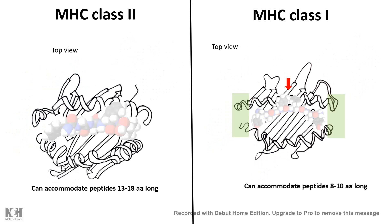MHC class 1's peptide binding groove is such that the ends are narrowed and closed. As a result, only small or shorter peptides ranging from 8 to 10 amino acids in length can be accommodated in that groove.